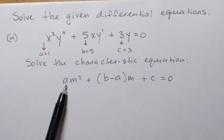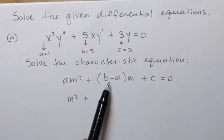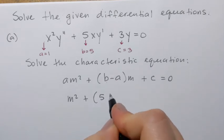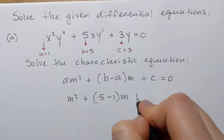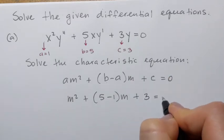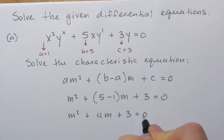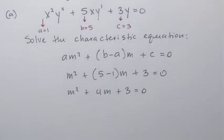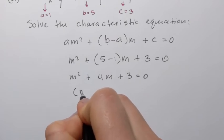So it's going to look like this: a is 1, so it's m squared plus (b minus a), which is 5 minus 1, times m plus c, which is 3, equals 0. That simplifies to m squared plus 4m plus 3 equals 0. Now we have to solve this quadratic equation — if we can use factoring, that's great; otherwise we'll use the quadratic formula. For this equation, we can use factoring.